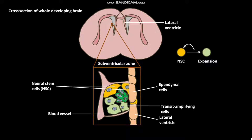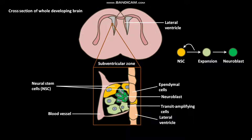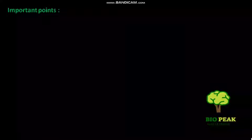Neural stem cells, or NSC, undergo division to renew themselves and to form a dividing population of transit amplifying cells, or TA cells. TA cells undergo division to form neuroblasts. Neuroblasts give rise to neurons.